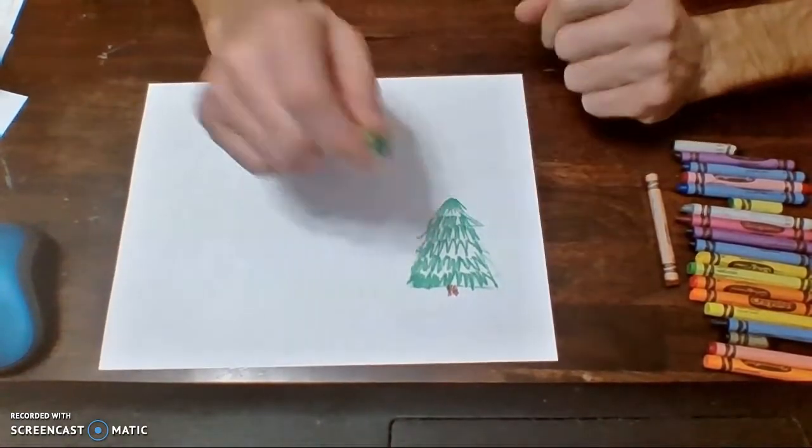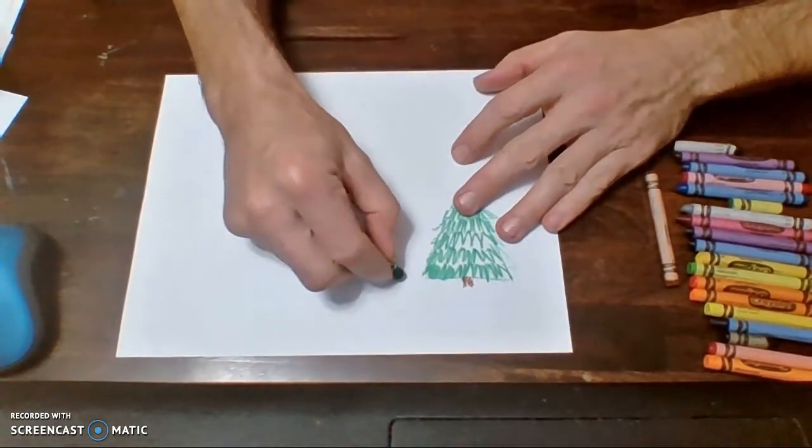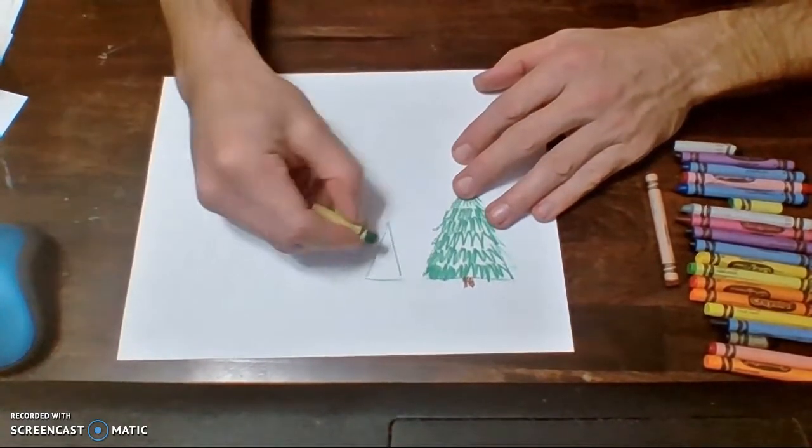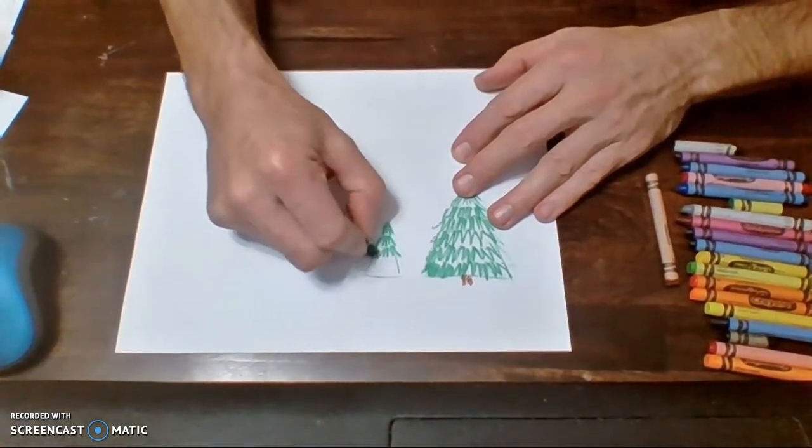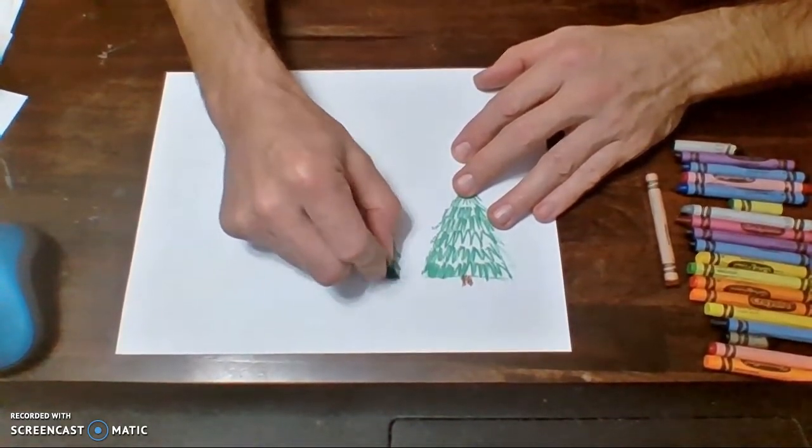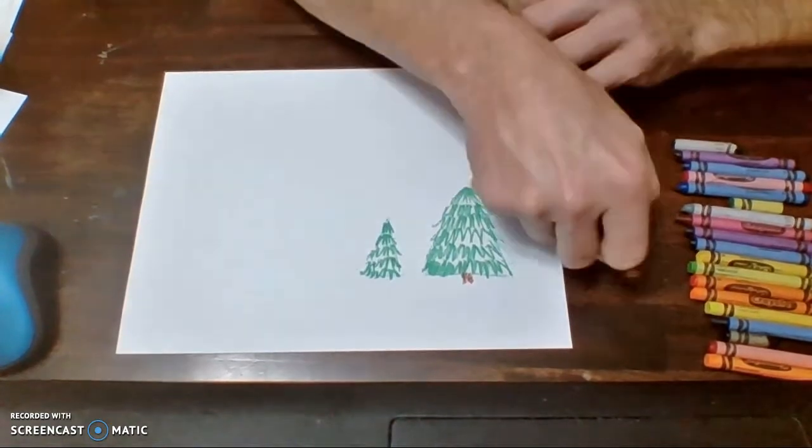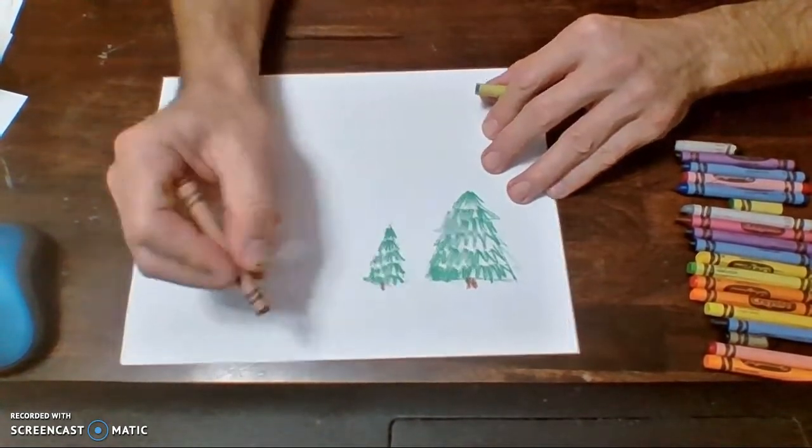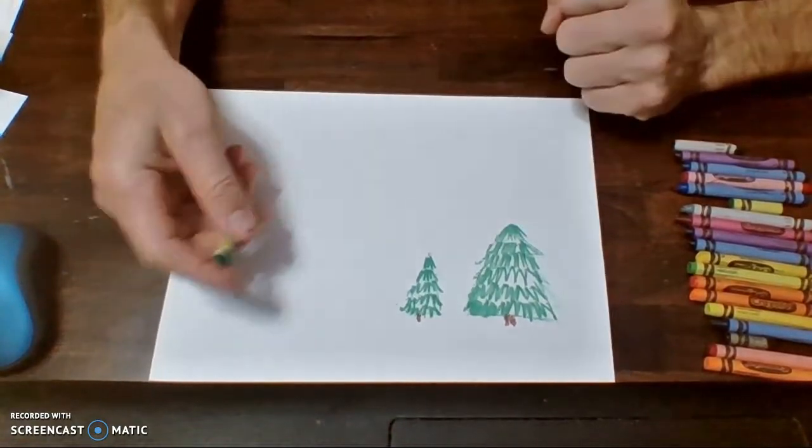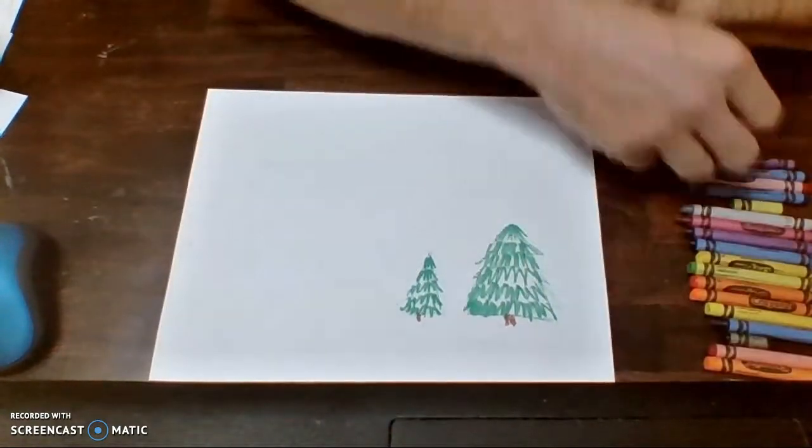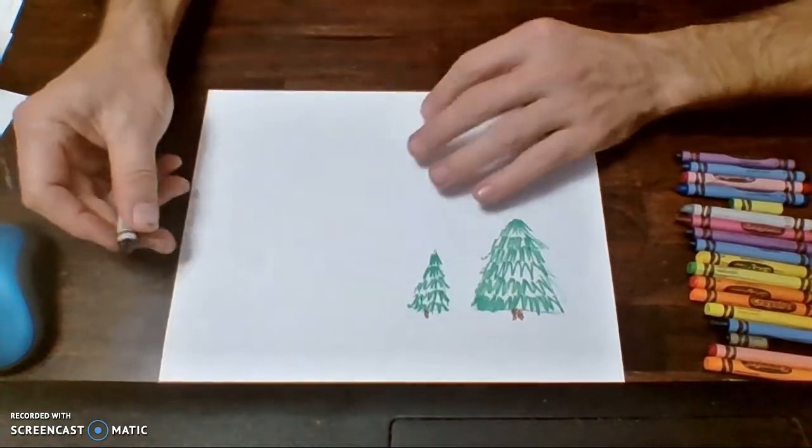And that right there already looks more realistic than what I was trying to do before. This looks like a scratchy pine tree. It doesn't matter if it's big. It doesn't matter if it's small. I just start off with a regular old triangle. And then I start making layers of needles. And that tends to make a pretty good looking pine tree. Now, not all trees are pine trees. And a lot of trees lose their leaves during the winter. So if you want to draw one of those, then just remember how to make a regular tree.